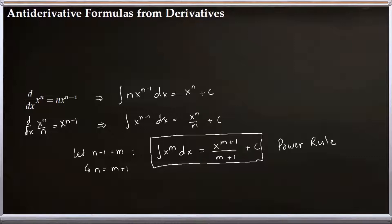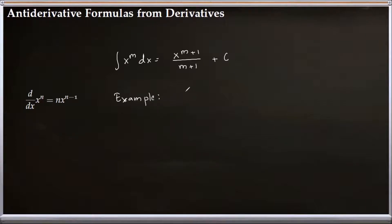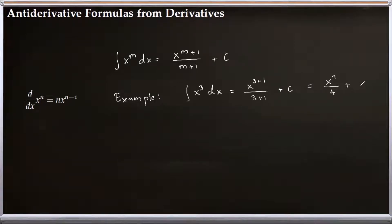Let's quickly do a couple of examples using the power rule formula: integral of x^m dx = x^(m+1)/(m+1) + C. For example, the antiderivative of x cubed: here m equals 3, so it becomes x^(3+1) divided by (3+1) plus C, which gives us x to the 4th over 4 plus C.